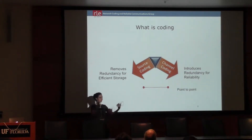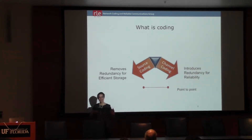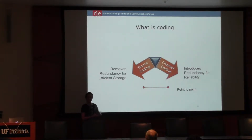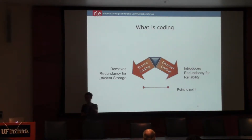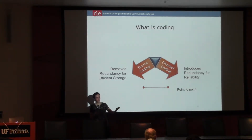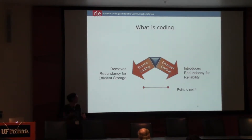Please forgive me — I know many people in this room are specialists in coding, but given this fairly mixed audience, it might be worthwhile to give the cartoon version of what coding is. We have roughly two sorts of coding. One is source coding, like Gzip, which removes redundancy for efficient storage or representation. The other is channel coding, which introduces redundancy for reliability against whatever deleterious effects the channel or transmission medium has.